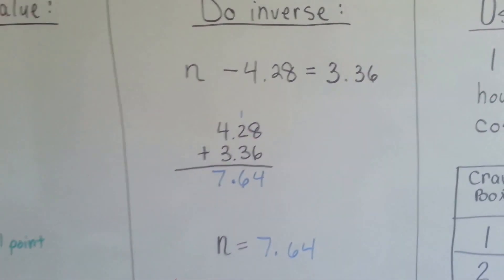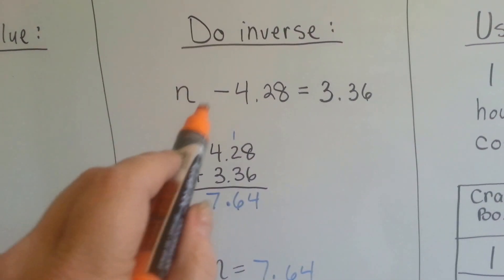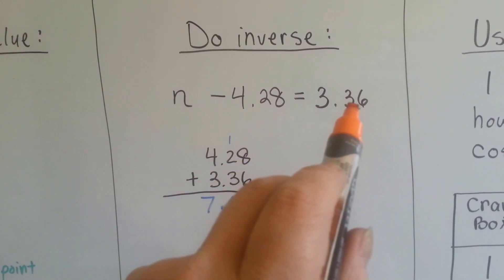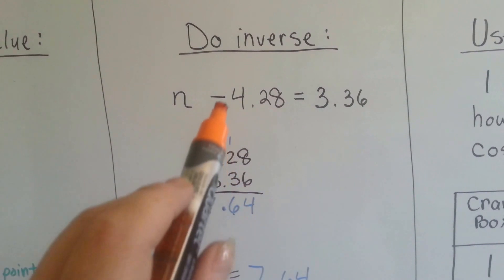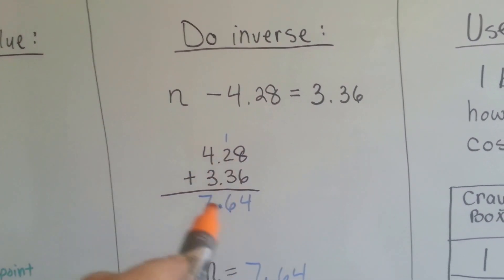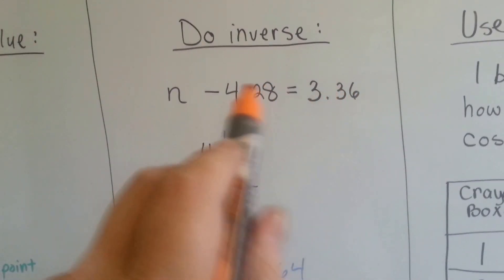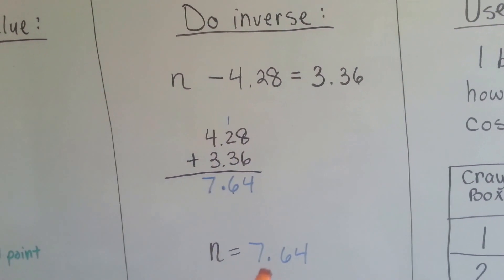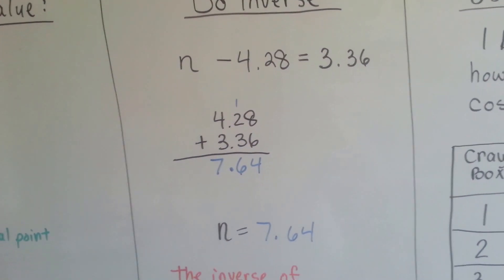We could do inverse, so if you had n minus 4.28 equals 3.36, we could just do the inverse and add, which is the opposite of subtraction. And if we add these two numbers together, we'll get 7.64, and we know n is equal to 7.64.